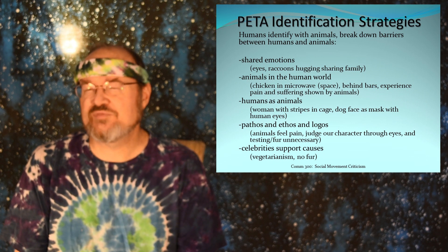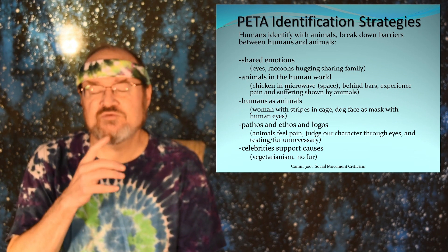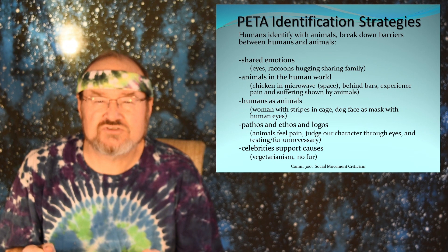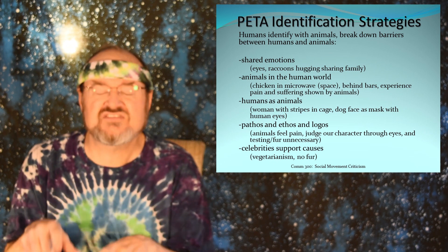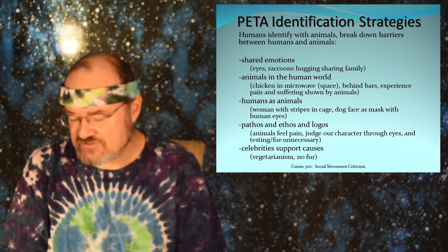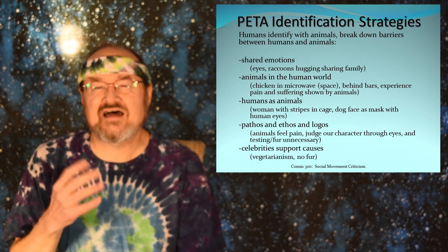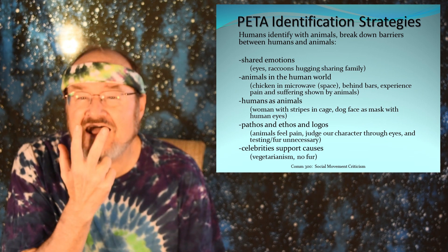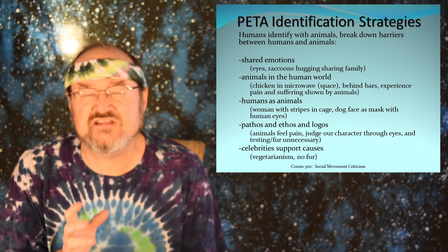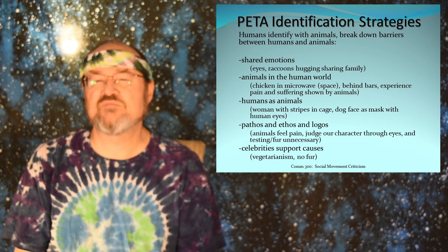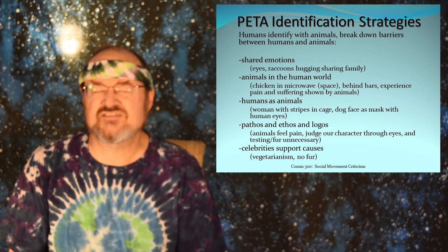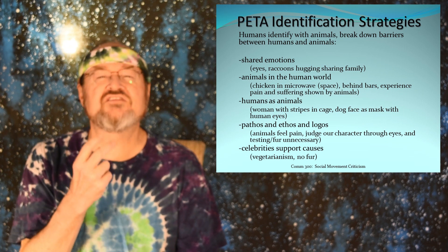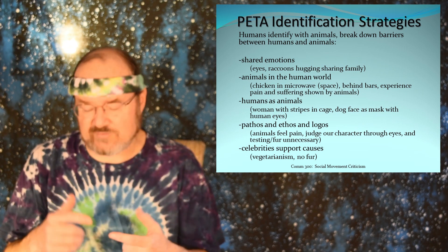When we identify with animals, PETA uses several strategies. One is to put humans in the cage so that you see the human looking out at you — that's powerful because we see ourselves in that situation and know we don't like being in cages. Another is to break down the barrier between animals and humans. One important element is the eyes — we see the eyes of animals who are feeling pain or being used to test for cosmetics or whatever the particular issue is. That gateway to the soul is part of the rhetorical power of human-animal identification.